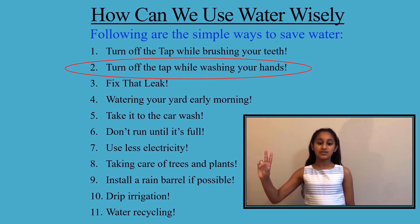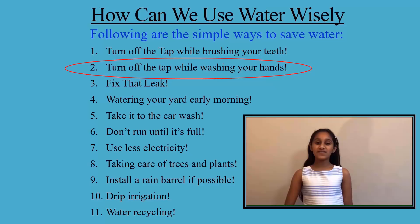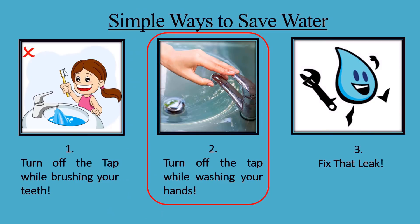Number two: turn off the tap while washing your hands. Do you need all that water to run while you're scrubbing your hands? Save a few gallons of water by turning the tap off after you wet your hands until you need to rinse.